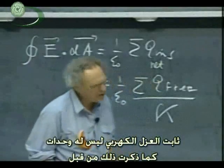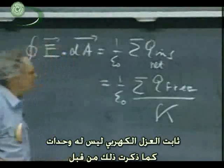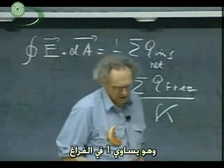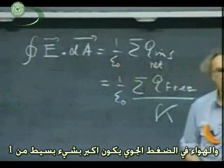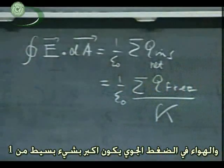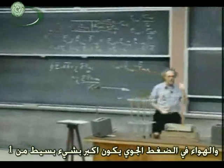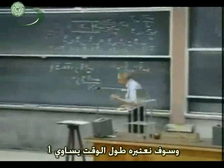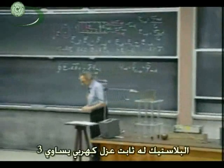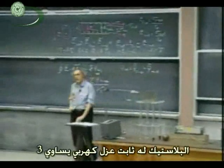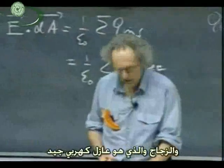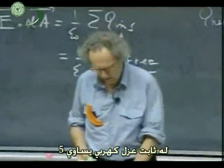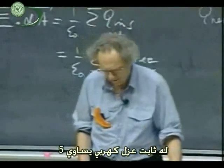The dielectric constant is dimensionless, as I mentioned already. It is one in vacuum by definition. At one atmosphere, gases typically have a dielectric constant just a hair larger than one, and we will most of the time assume that it is one. Plastic has a dielectric constant of three, and glass, which is an extremely good insulator, has a dielectric constant of five.